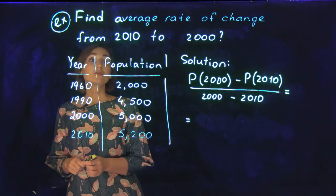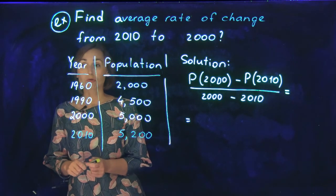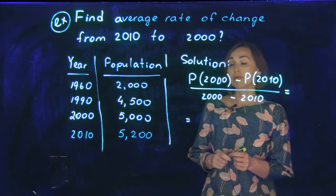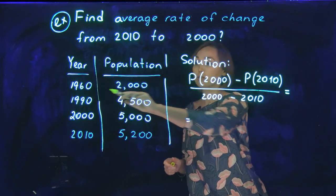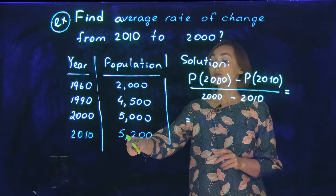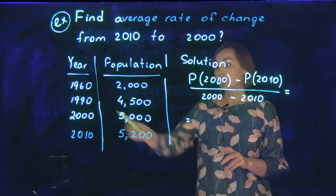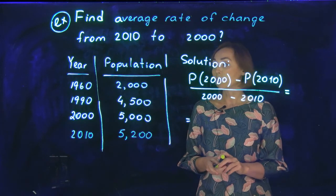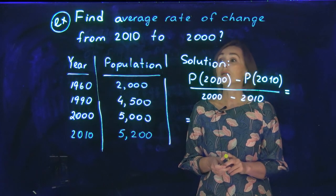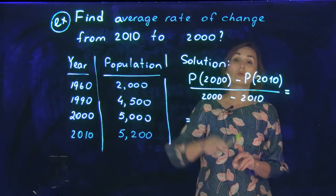Find the average rate of change in the population from 2010 to 2000. The population function is given by a few values: in the year 1996 it was 2000, in the year 2010 it was 5200, and you have two more given years and population values. We are looking for the average rate of change between 2010 and 2000.